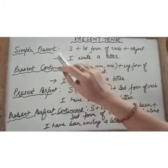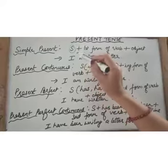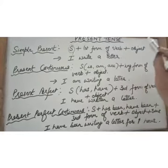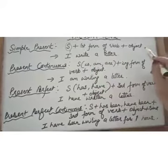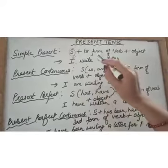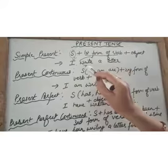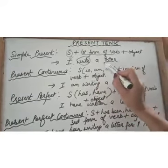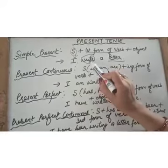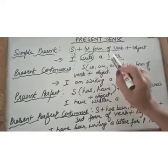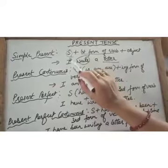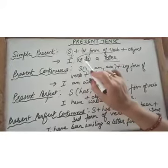In simple present, the structure is: subject plus first form of verb plus object. For example, the sentence 'I write a letter' — subject is 'I,' verb is 'write' (first form), and object is 'letter.' Before doing any tenses, you should know the three forms of the verb. For 'write,' the three forms are: write, wrote, written — where 'wrote' is the past form and 'written' is the third form.